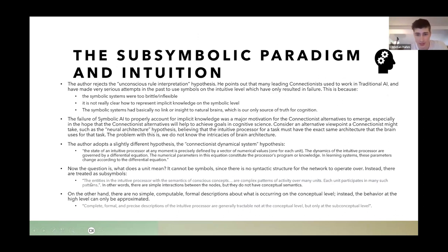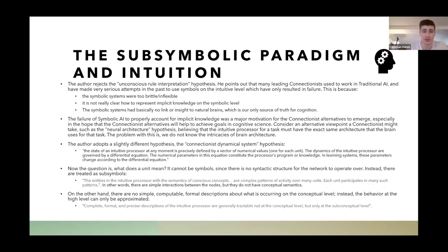The author rejects this, pointing out that many leading connectionists used to work in traditional AI and made very serious attempts to use symbols on the intuitive level, but this only resulted in failure. The symbolic systems were too brittle and inflexible — it's not clear how to represent implicit knowledge on a symbolic level, such as continuous values. And symbolic systems had no link or insight to natural brains, which is our only source of truth about cognition. That's basically why the author is pro-connectionist.